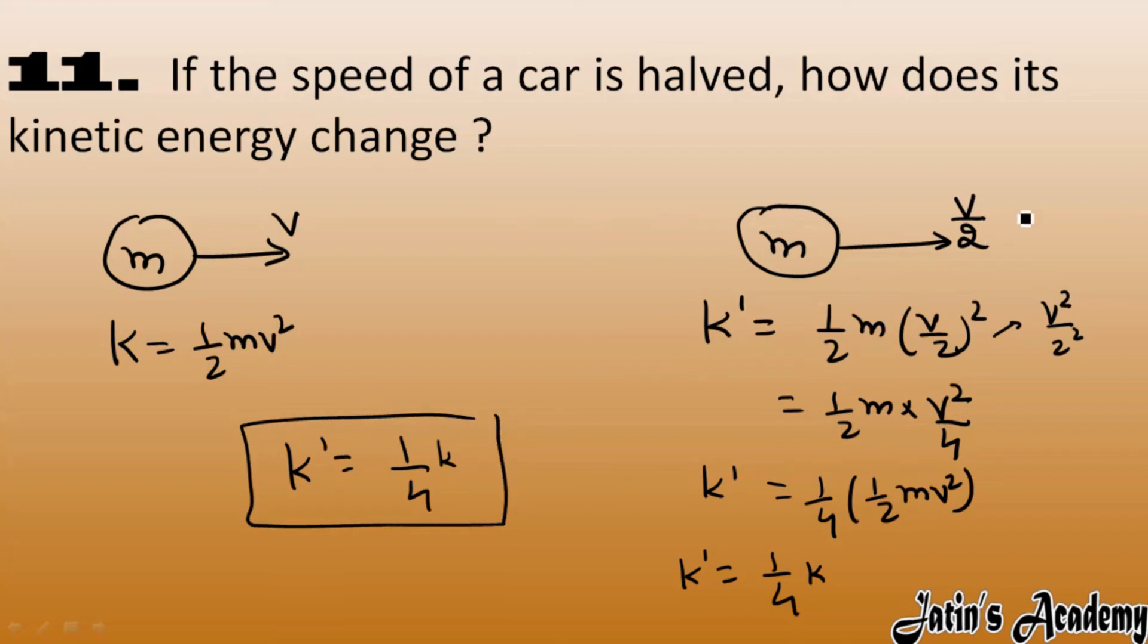So here we can write k dash is 1 by 4k. It means that by making the velocity half, kinetic energy becomes 1 by 4th of initial kinetic energy, clear.